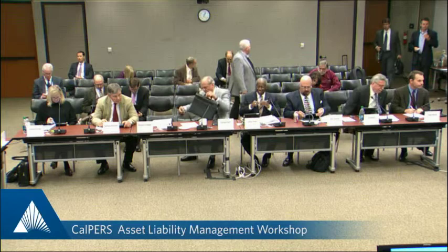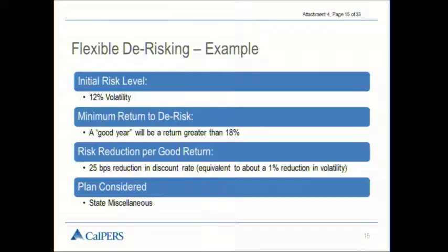We're ready to go. Alan, you may continue. Thank you, Mr. Jones. So we're about to go through an example of how this could work. This is one of our 5,000 or so stochastic examples. We used as a starting point a 12% investment volatility and assumed that we'd set the trigger at 18%. This is the more conservative — you need a higher return in order for this de-risking trigger to happen.